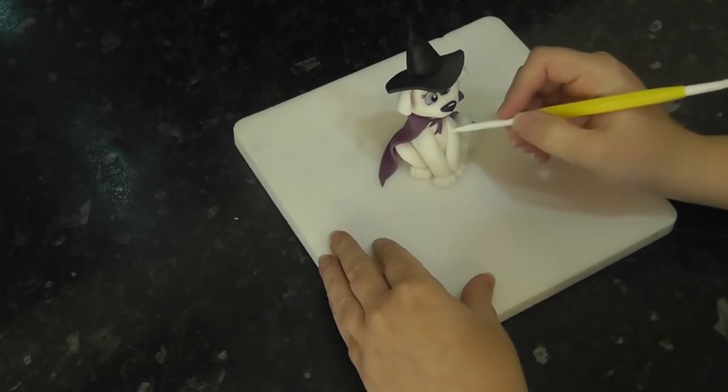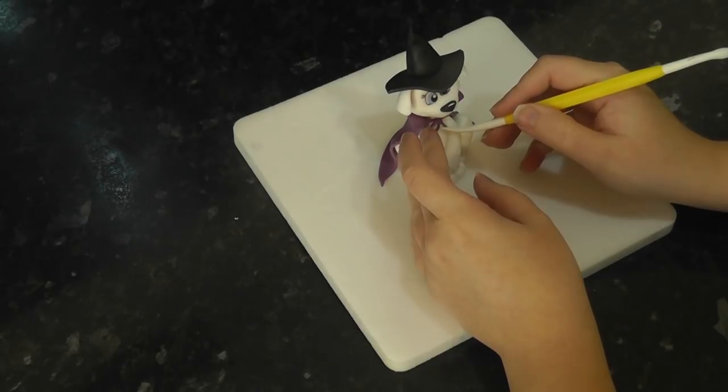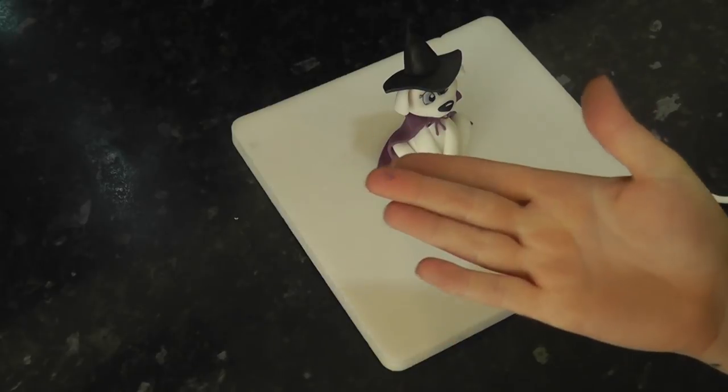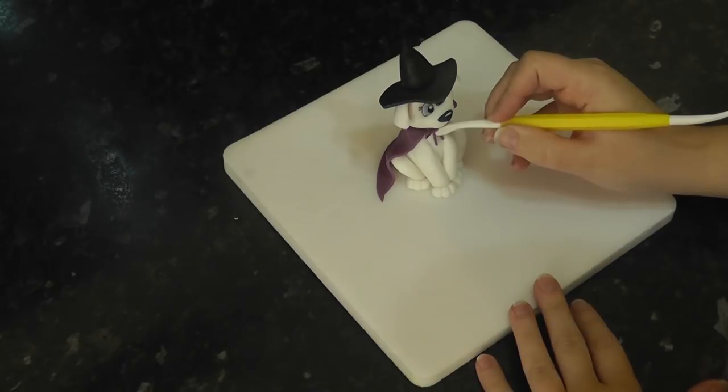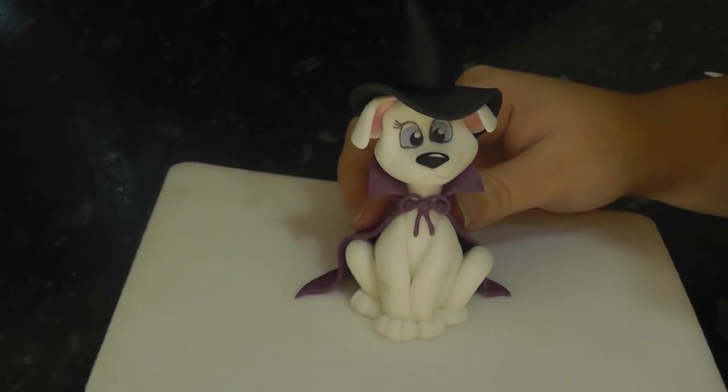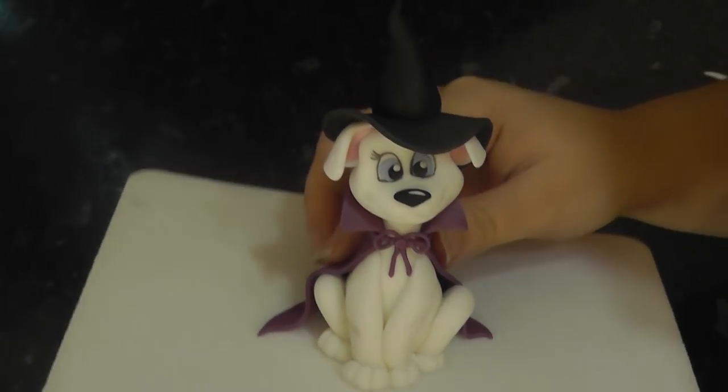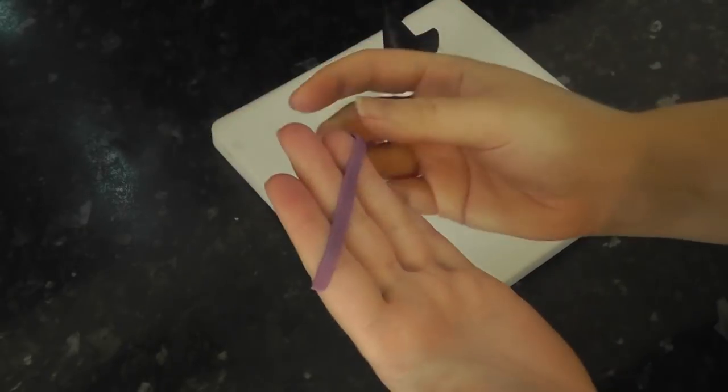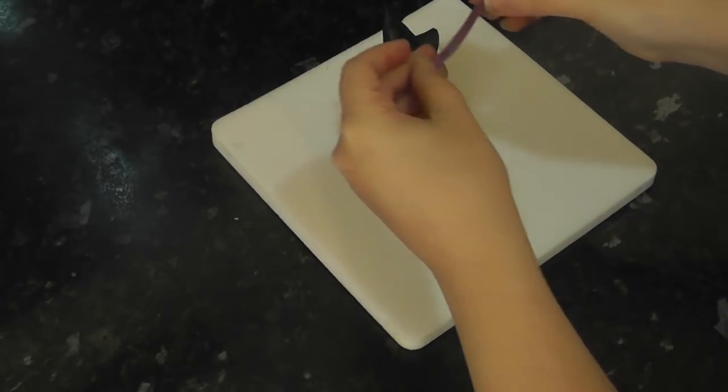Attach this to the front of the cape and finish it off with a ball of paste for the knot. Next, cut out a thin strip and wrap it around the base of the hat.